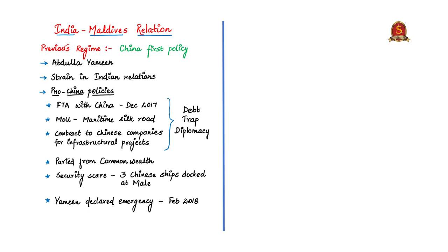The previous regime under Abdullah Yameen followed a rigorous China-first policy. Maldives signed a free trade agreement with China in 2017 — it is only the second country after Pakistan in South Asia to sign an FTA with China. India does not have an FTA with Maldives yet. Maldives also signed an MOU with China on the maritime silk route, and many contracts were given to Chinese companies for infrastructure development projects like the Maldives airport. This signalled a downfall in India-Maldives economic relations and growing debt-trap diplomacy between Maldives and China, with Maldives' national debt ballooning to a quarter of its GDP.